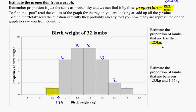the proportion of lambs that are less than that value, so everybody below that line, and in this case that is just one lamb out of the 32 total. So that's one out of 32. And if you put that into your calculator, 0.03125. So that would be the proportion of lambs that are less than 1.25 kgs.